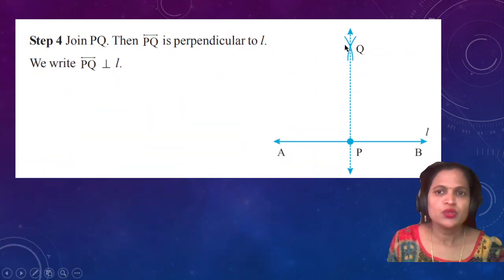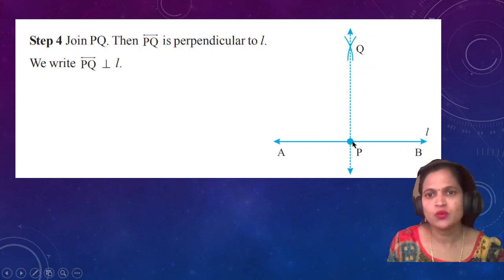Then, with the help of the scale, join PQ. Then PQ is perpendicular to L. With the help of the scale, join PQ. PQ is perpendicular to line L. This is how you construct with the help of the compass.